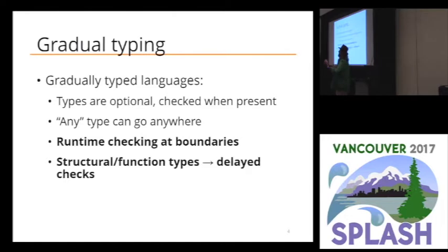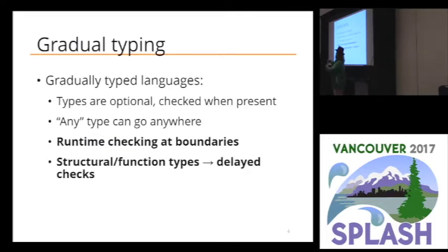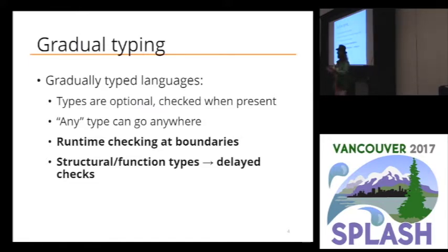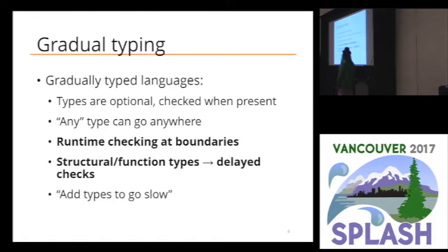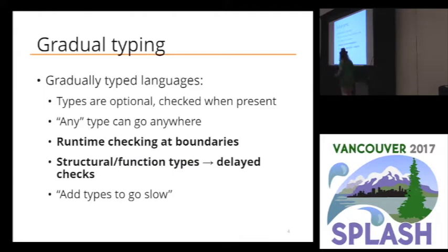But that means that if we have structural types or functional types, we can't just fully check them when they appear. We can't get a value and immediately say 'this is a node in a list,' because a node in a list is a recursive type and that would involve checking an infinite number of things. So instead we delay the checks and only check when we get to something that is actually checkable — a primitive value, something where we can just look at a tag. That has created the impression that in gradual typing, you add types to go slow. A fully typed program can take advantage of type information and go fast, but if you take a fully untyped program and add some types, you go slower — which just feels wrong.